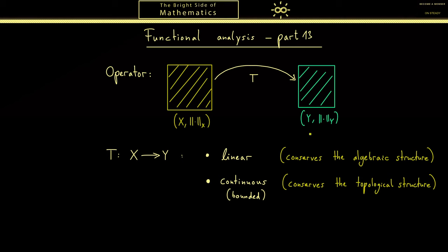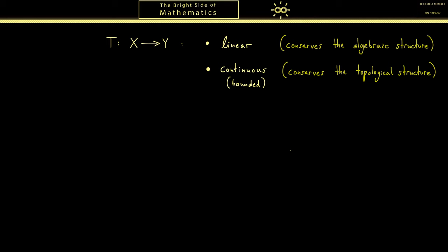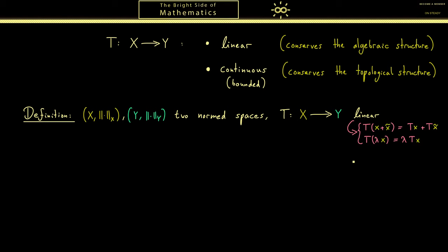Okay then let's start with the definition of the notion bounded. As before we have two normed spaces and a linear map T. Of course linear always means it conserves the vector addition and the scalar multiplication. This means that we have these two formulas and maybe you also recognize another common notation here. For linear maps we will omit parentheses if possible.